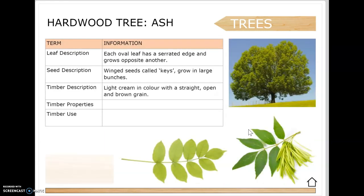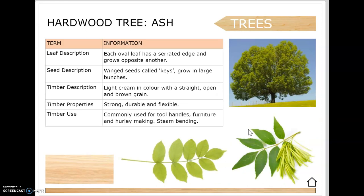Ash is a favorite Irish hardwood. The leaf is oval with a serrated edge and leaves grow opposite each other. The seeds are keys that grow in large bunches, nearly like little helicopters. The timber is cream in color with a straight, open, brown grain. It's strong, durable and flexible, and is commonly used for tool handles, furniture, hurley making and steam bending. The flexibility is important - it reduces vibration when using tools like hammers - and the same principle applies for hurley making.